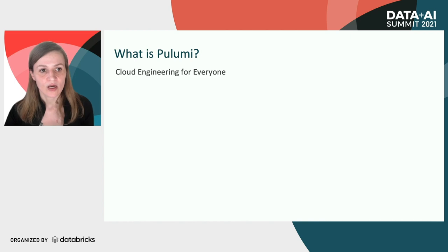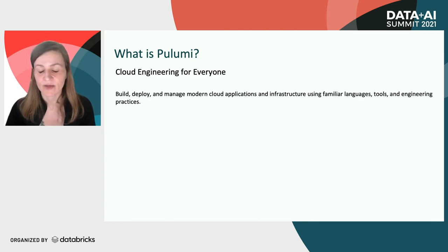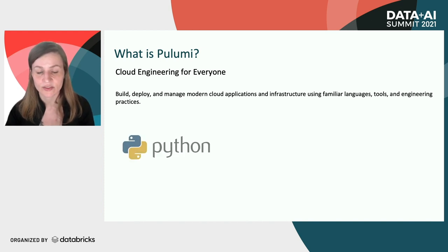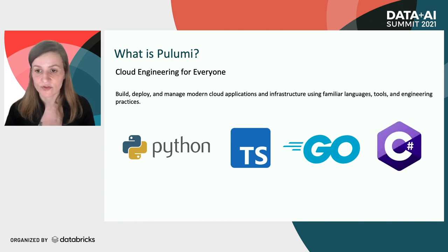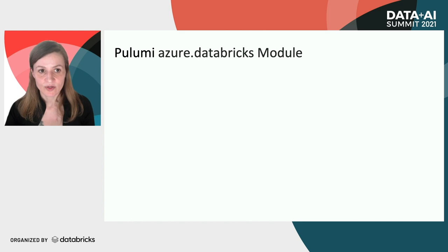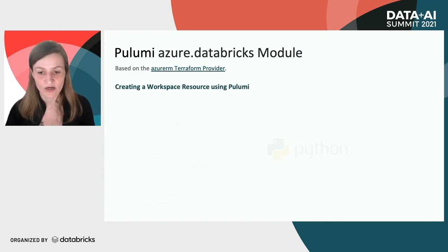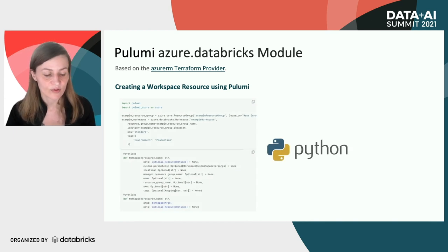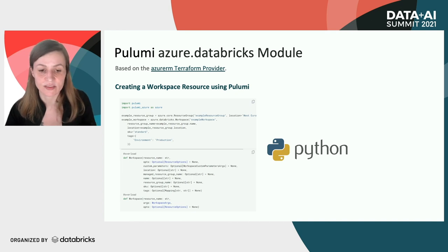What is Pulumi? 'Cloud engineering for everyone — build, deploy and manage modern cloud applications and infrastructure using familiar language tools and engineering practices.' With Pulumi, you can write your infrastructure as code in Python, TypeScript, Go, or C#. If any of those are languages you're really familiar with, it makes infrastructure as code a lot more accessible. This example shows a Pulumi Azure Databricks module — it's based on the Azure RM Terraform provider. This is the Python flavor, and it's just an example of setting up a workspace with Pulumi. The great thing is that because you're writing in Python, if there's any missing functionality you can literally just wire in the REST API as we've done in this demonstration.